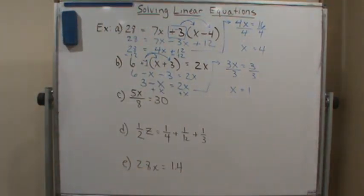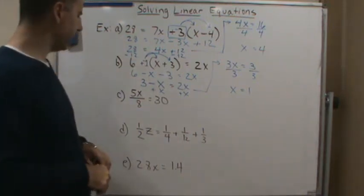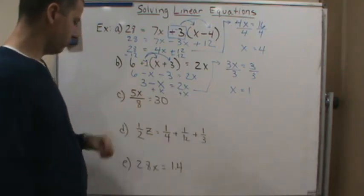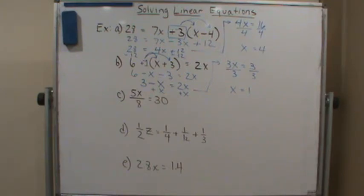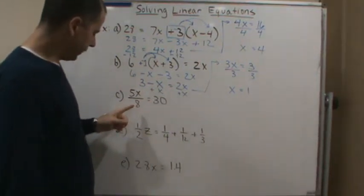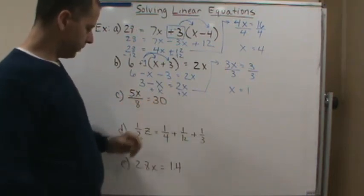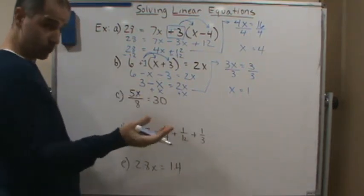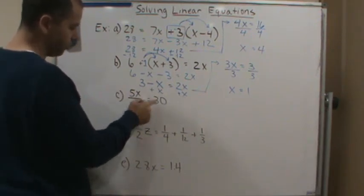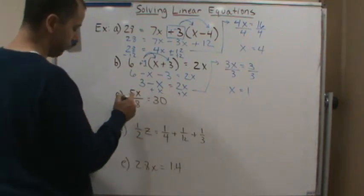For Part C, notice we've got a fractional part. There are a couple of ways to do this. We could treat it as a fraction with multiplication and division, or we can treat it as multiplication and multiply by the reciprocal. Here I could divide both sides by 8 — looking at it as 5x divided by 8 — so to move the 8 over I need to multiply both sides by 8.